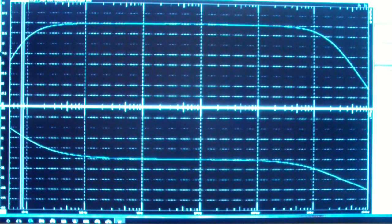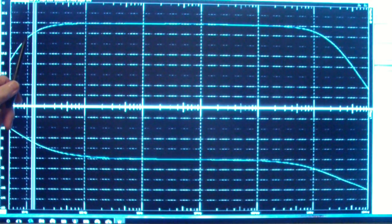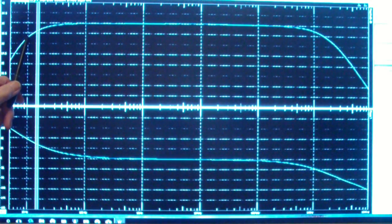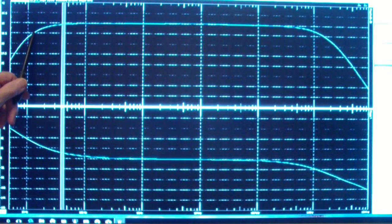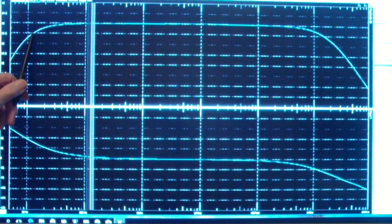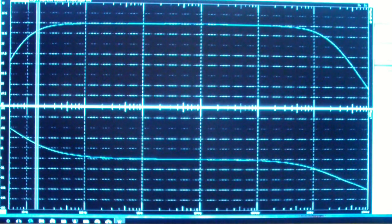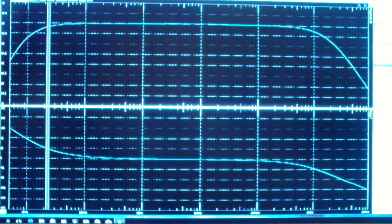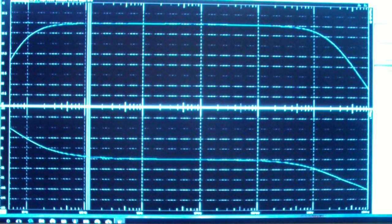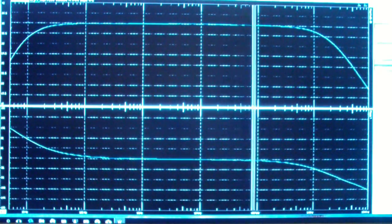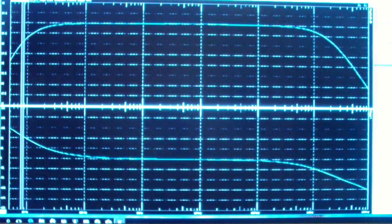The 3 dB point has moved up a little bit. It used to be right about here at 10 Hz. But it's now at about 12 Hz or so. When you cascade amplifiers like this, each of which has a certain bandwidth, the overall bandwidth of the group tends to get narrower.